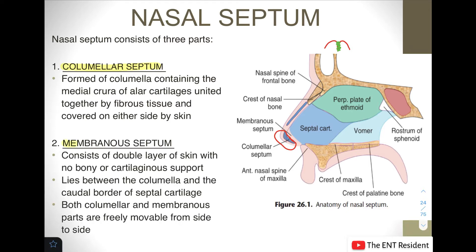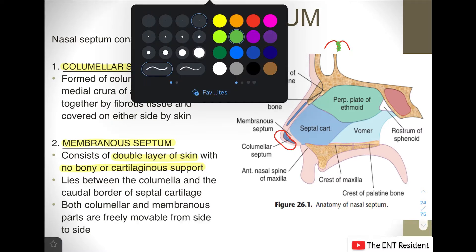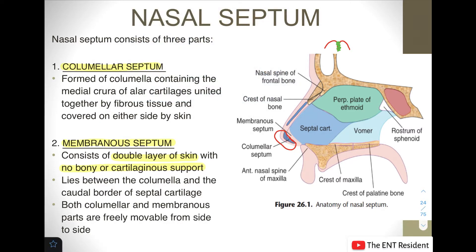Next comes the membranous septum. The peculiar part of the membranous septum is that it consists of a double layer of skin but does not have any bony or cartilaginous support. It lies in between the columella and the caudal border of the septal cartilage. As you can see in the picture, this region here is the membranous septum.